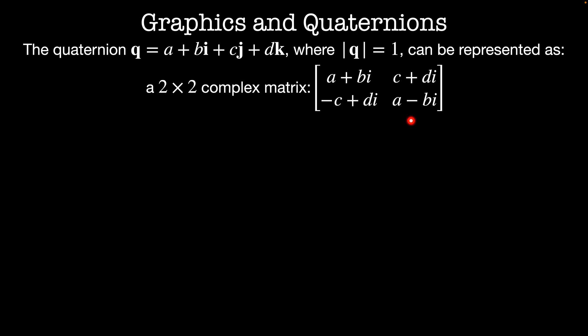can be represented as a 2 by 2 complex matrix a plus bi, c plus di, minus c plus di, a minus bi, where here i is the square root of negative 1 and not one of the quaternions. Or we can represent this by a 4 by 4 real matrix whose values are a, minus b, minus c, minus d, b, a, minus d, c, c, d, a, minus b, d, minus c, b, a.